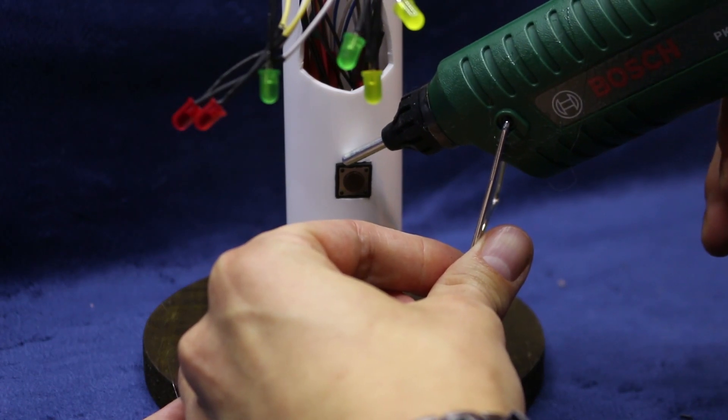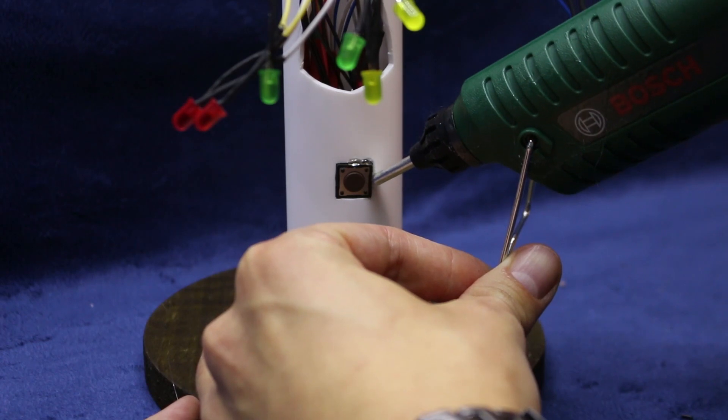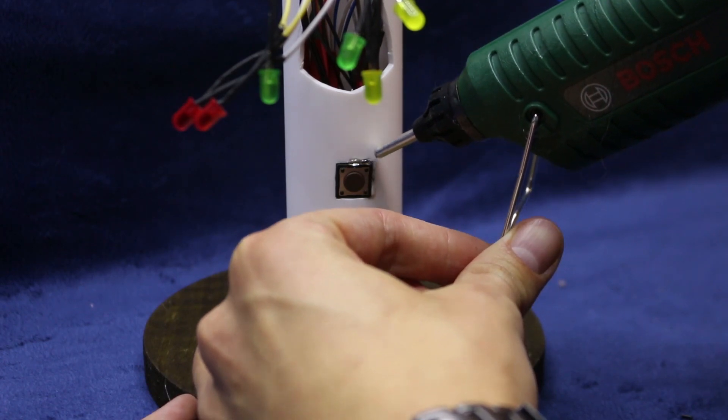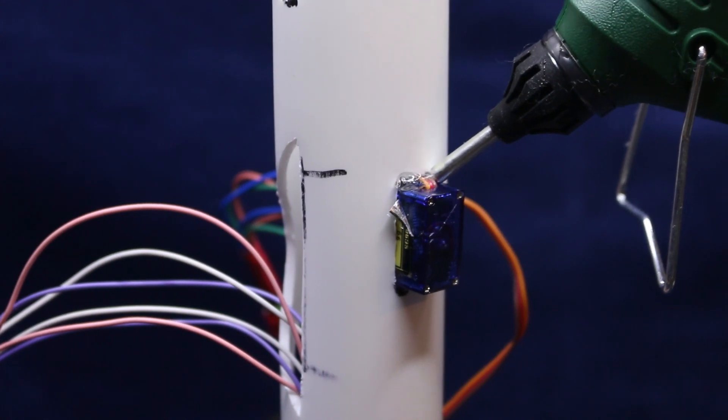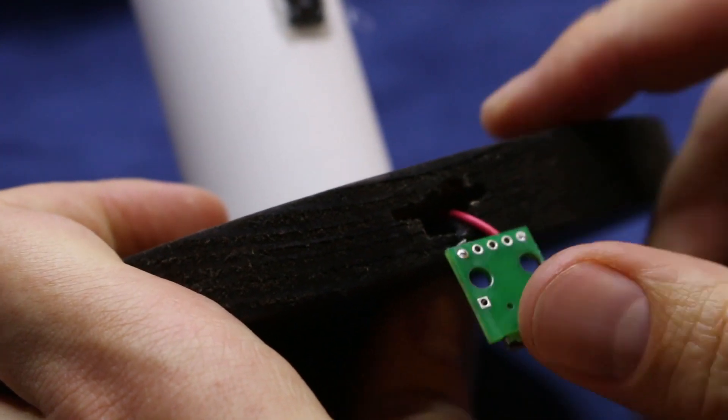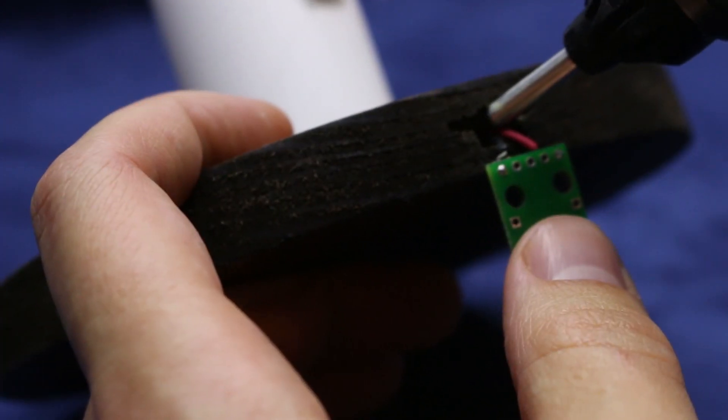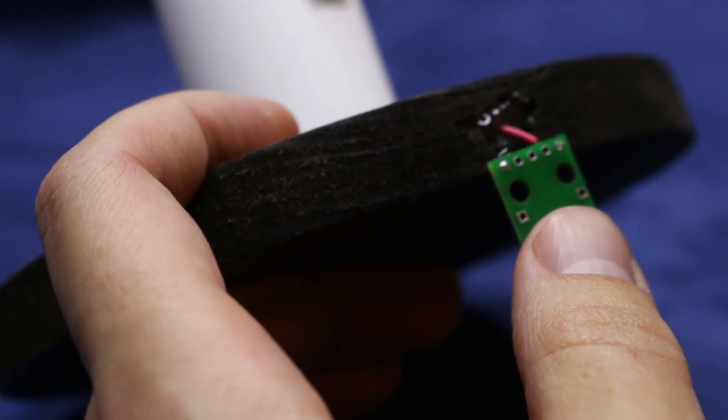I'm also using hot glue to fix the buttons in place. It would suck if I pushed them too hard and back into the pipe. The motor is also not allowed to move. So hot glue again. Not to forget the micro USB board. I'm putting the nozzle in and pushing plenty of glue. But quick though, I don't want it to set early.